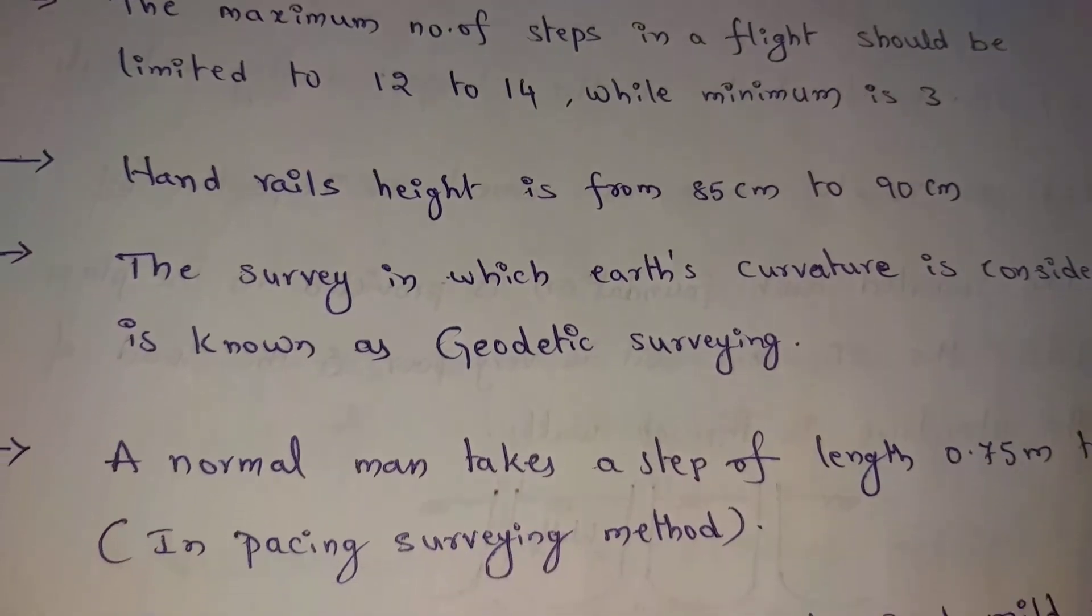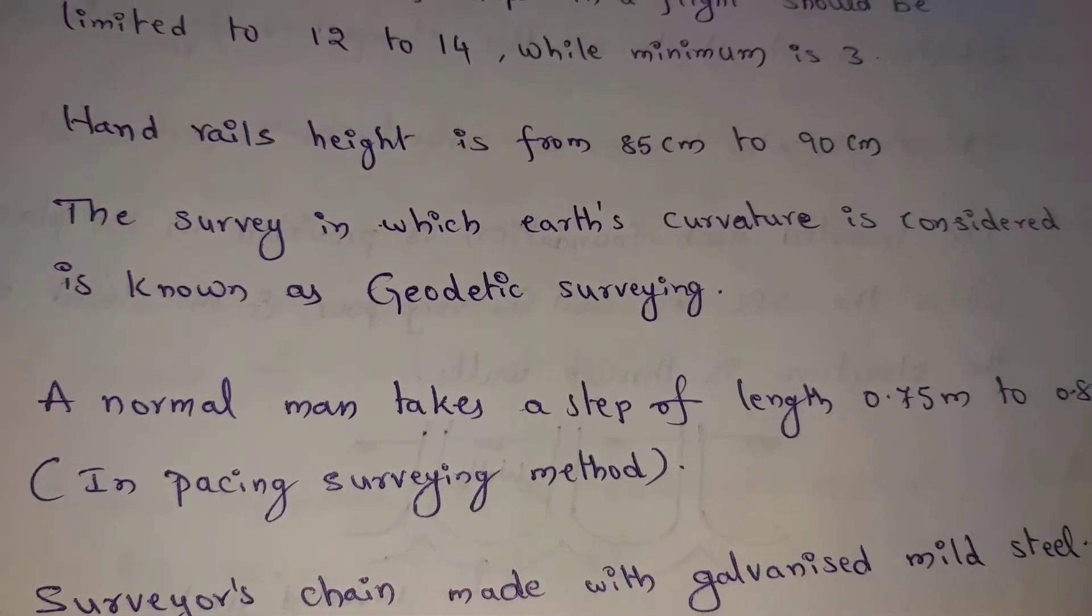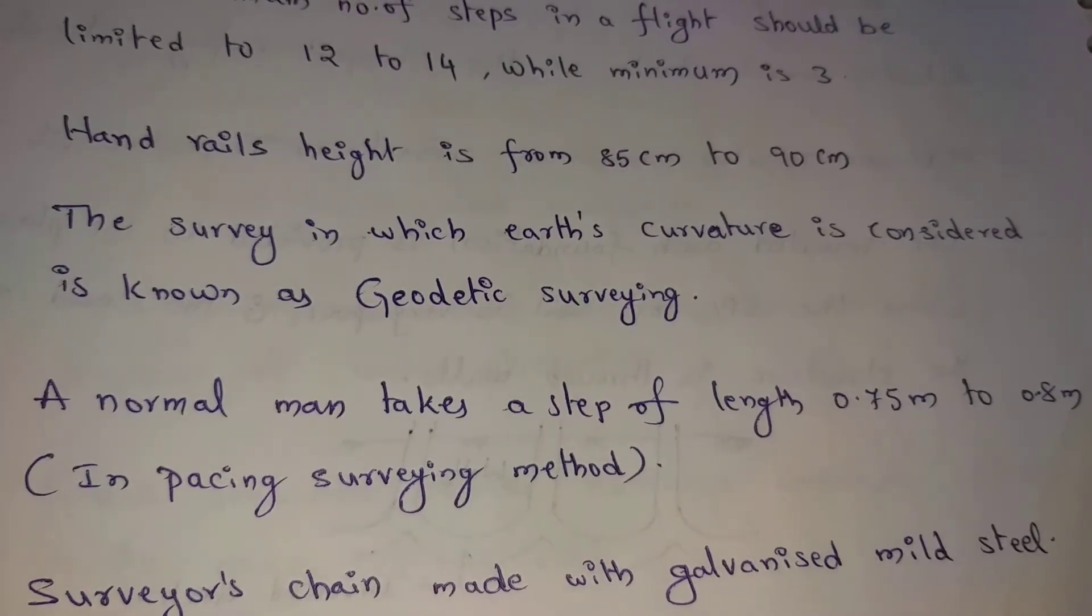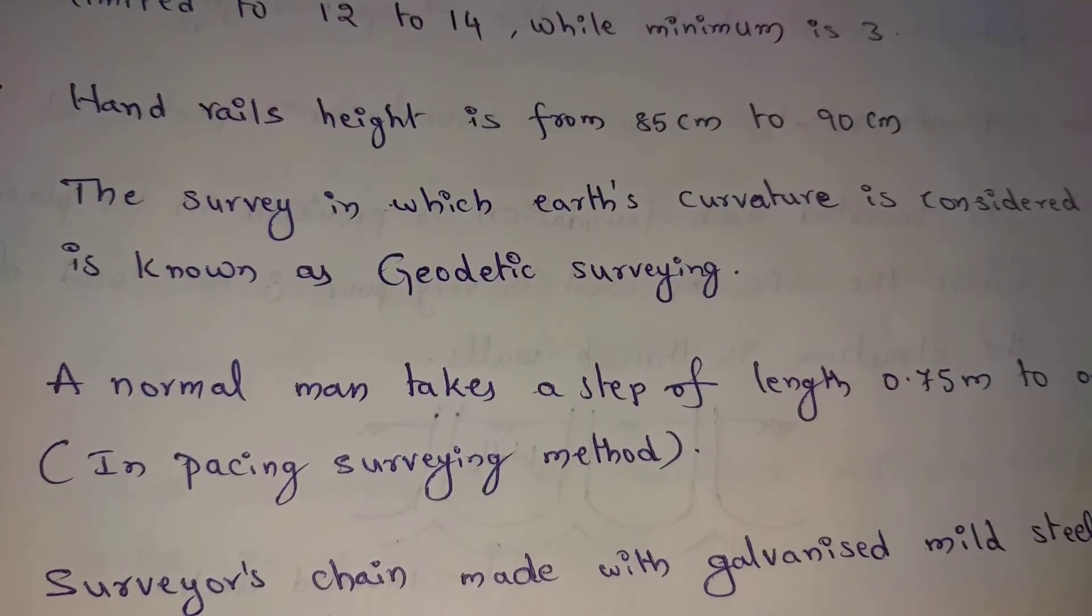A normal man takes a step of length 0.75 meter to 0.8 meters in pacing surveying method. One of the surveying methods, you can see the distance. Actual one normal man takes one feet to another foot, length of 0.75 meter to 0.8 meters. This is the pacing survey.